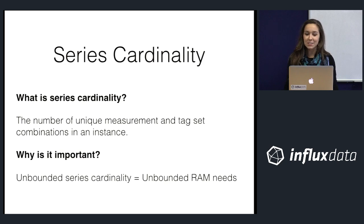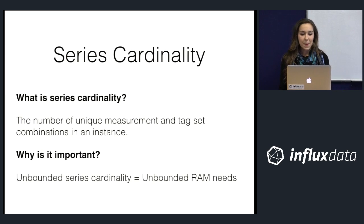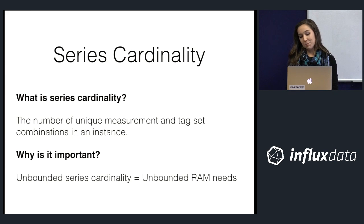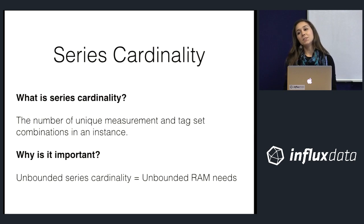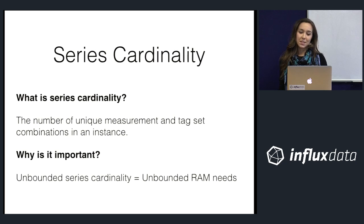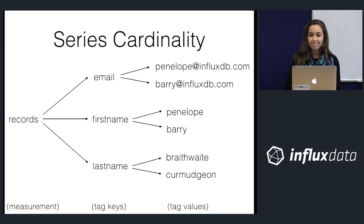Let's start with series cardinality. The basic definition is just the number of unique measurement and tag set combinations on your instance. Why is it so important? If you have unbounded series cardinality — meaning the number of series on your database keeps increasing over time forever — your RAM needs are also going to keep increasing over time forever, and that could lead to bad things.